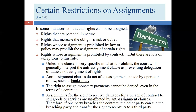Rights whose assignment is prohibited by law also cannot be assigned. For example, if the obligor agreed to provide wine, beer, or liquor and I assign my right to someone under 21, the obligor might be violating the law to deliver alcohol to that assignee — and so would not be required to do so.